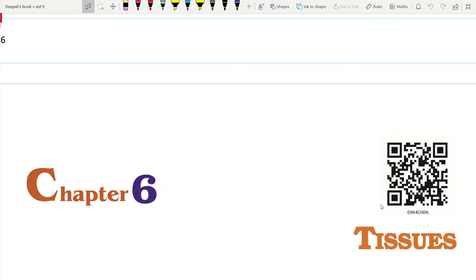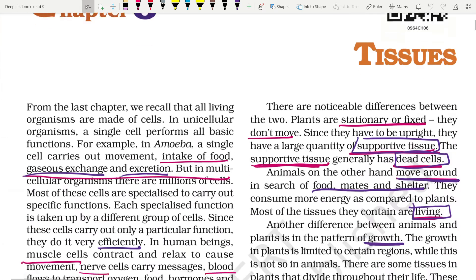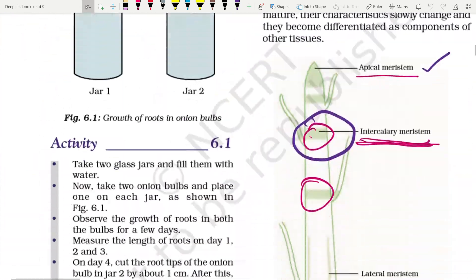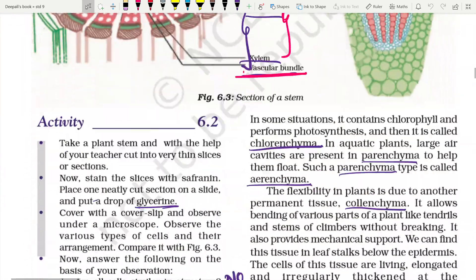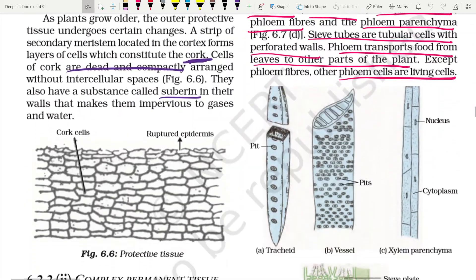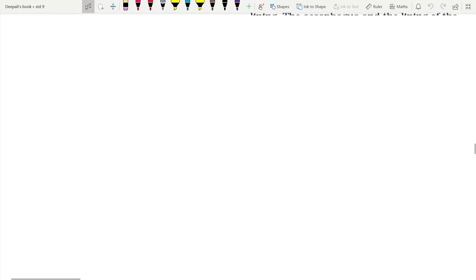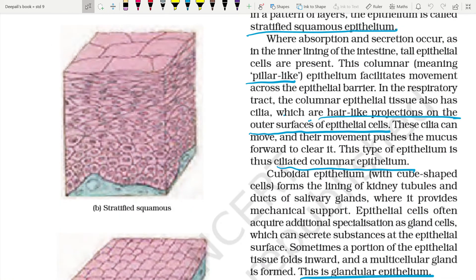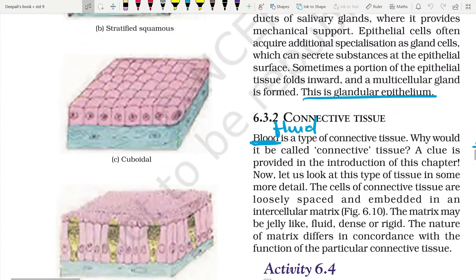E-biology class, Fatima Convent High School, myself Dipali. Chapter 6: Tissues. Let us see another form of plant tissue and animal tissue. We are studying in detail the animal tissue. The next tissue in the category of animal tissue is muscular tissue.